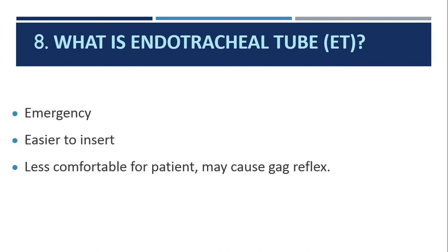The eighth question: what is an endotracheal tube (ETT)? In an emergency, the endotracheal tube is inserted into the trachea. Care must be taken that the ETT does not go beyond the carina, otherwise it may enter the right lung — causing hyperoxidation on the right side, indicating improper placement. It is easier to insert but less comfortable for the patient and may cause a gag reflex. In adults, the ETT has an inflating balloon, whereas in pediatric patients and infants it does not.